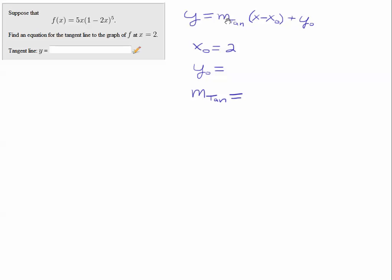Well x naught is given to us. That's the point here, x equals 2. And then if we want to compute y naught, we just plug it back into the function. We put the 2 in for x, and we compute that. We get minus 2430.